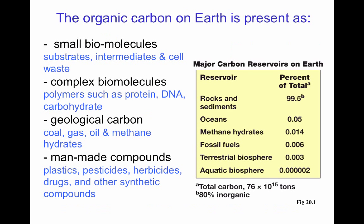Carbon can be found in small biomolecular molecules such as substrates, intermediates, and cell waste. It's also found in complex biomolecules such as polymers of DNA, protein, and carbohydrates. Carbon also exists in geological form as coal, gas, oil, or methane hydrates. We also have carbon in man-made forms such as plastics, pesticides, herbicides, drugs, and other synthetic compounds. The major carbon reservoirs on the planet are rock and sediment; the biological amount, either terrestrial or aquatic, is very small.